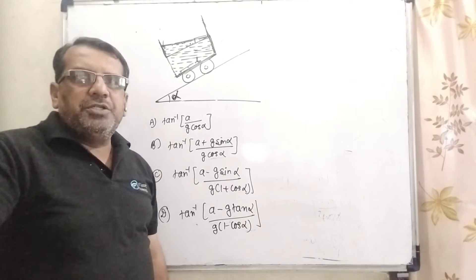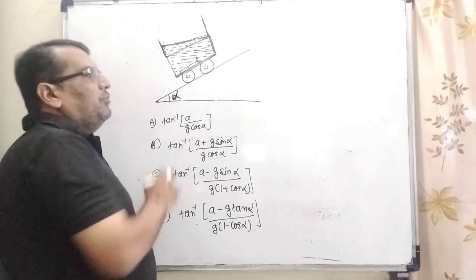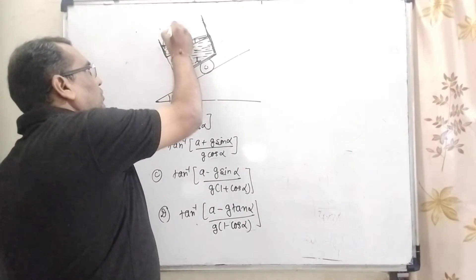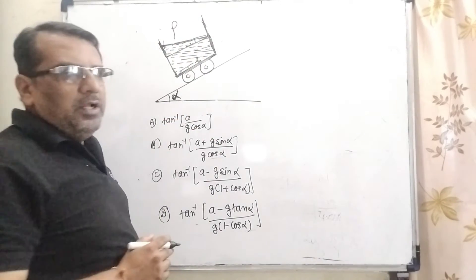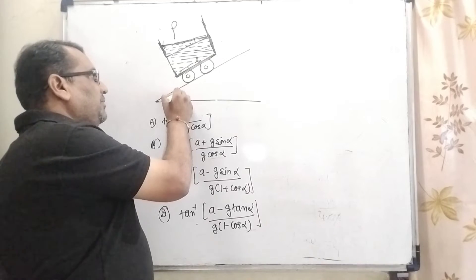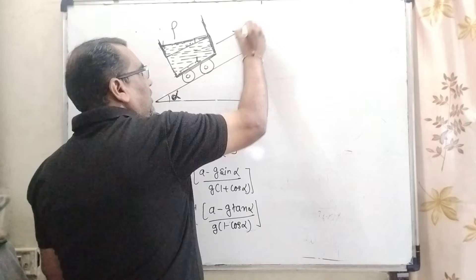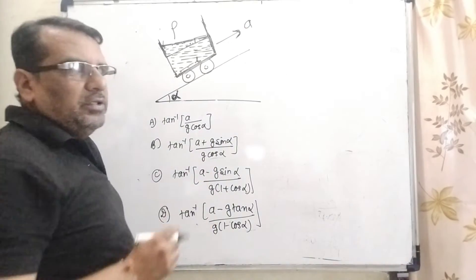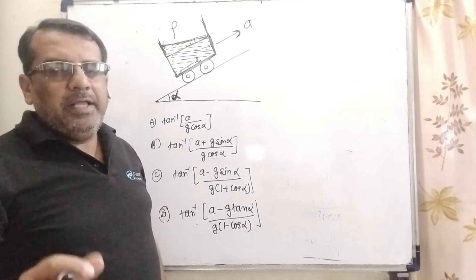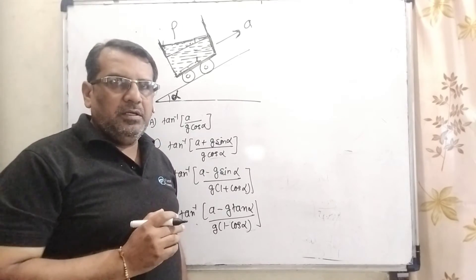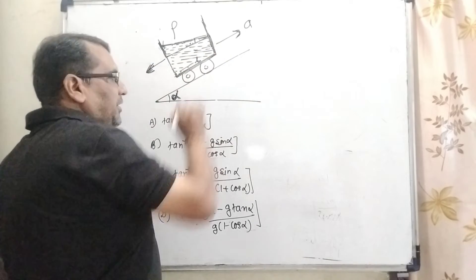Now, what is the question? Here we have given a container which contains fluid of density rho, which is moving up an inclined plane making angle alpha with the horizontal. Acceleration is acting to the right side along the incline. As we know, when any object is on a moving object, pseudo acceleration acts in the direction opposite to the motion.